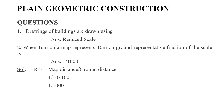First question: drawings of buildings are drawn easily if you use a scale. We will use a scale for building drawings. Second question: if one centimeter on a map represents 10 meters on the ground, what is the representative fraction of the scale? The representative fraction is the ratio of map distance to ground distance. Map distance is 1 centimeter; ground distance is 10 meters, which is 1000 centimeters. So the answer is 1/1000.